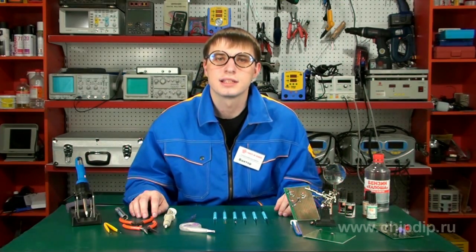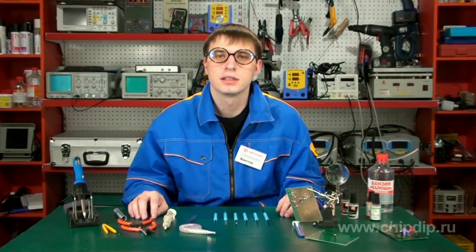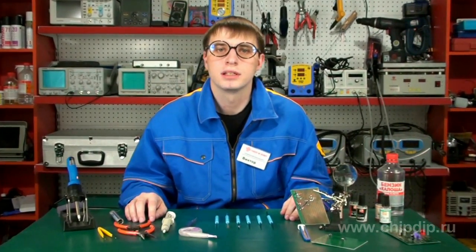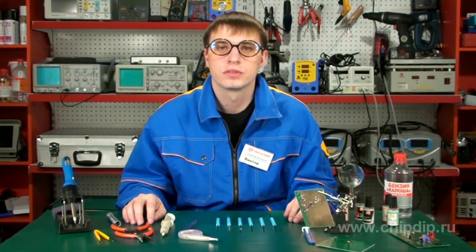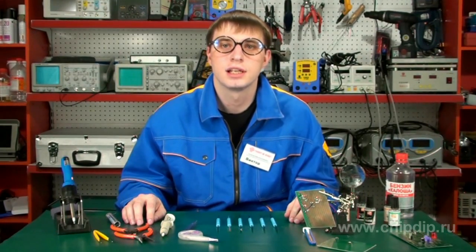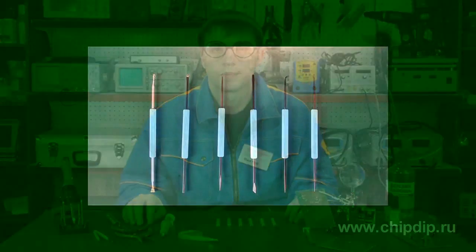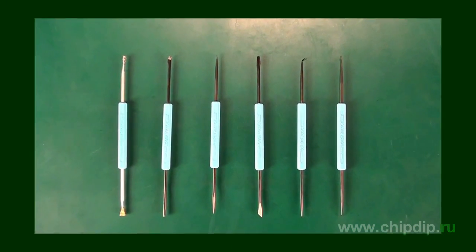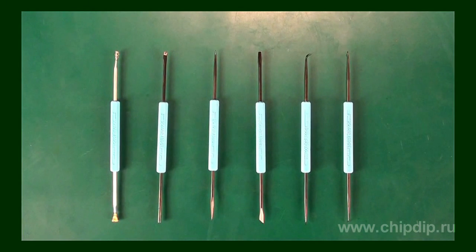The soldering process often gets complicated if you don't have the necessary solder at hand. Let's consider one of the sets designed primarily for assembling and repairing radio elements on printed circuit boards and in radio housings. This is the GUTE S810 set, consisting of 6 elements.